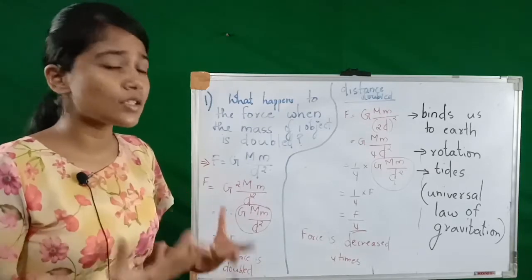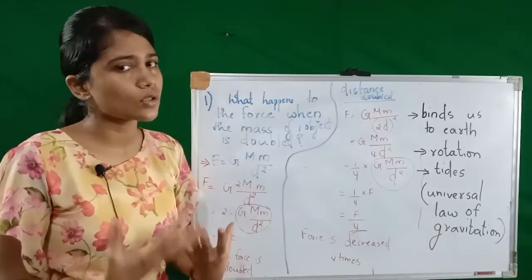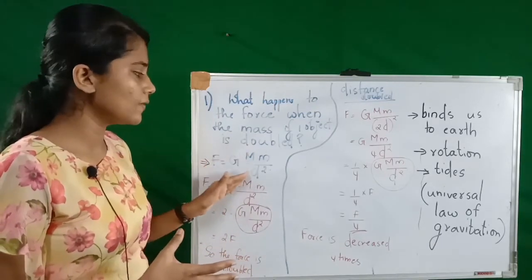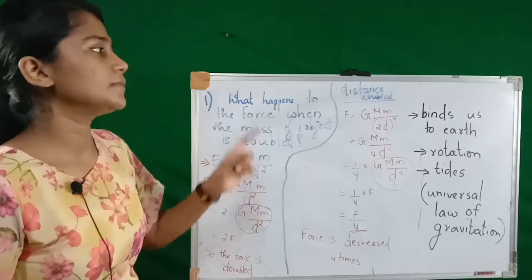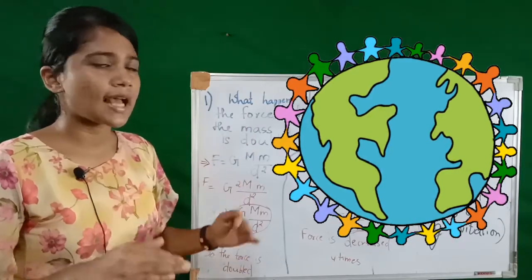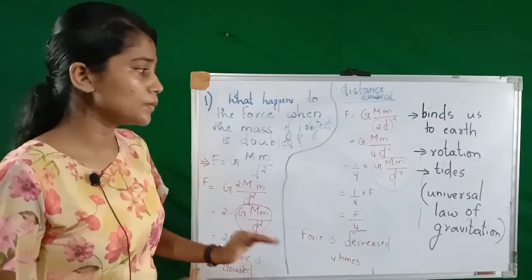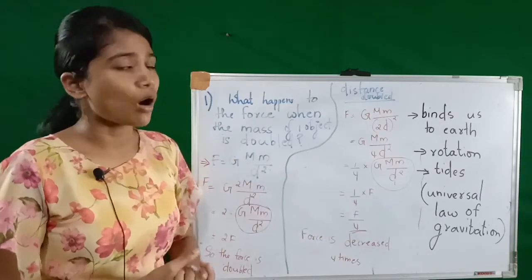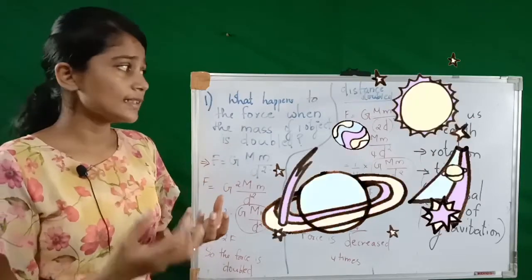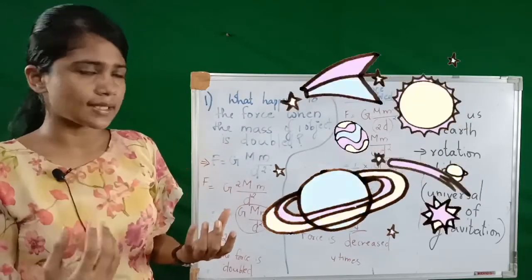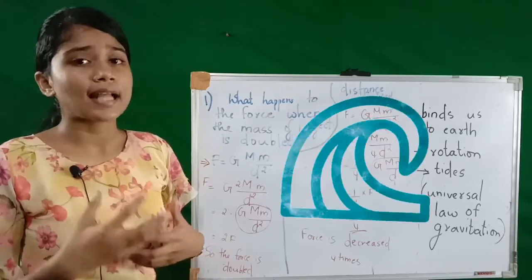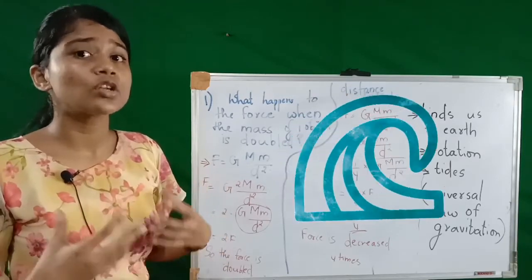Now we should know the uses of the universal law of gravitation, which is F equal to G into m into m the whole divided by d square. The first use is that it helps us stay bound to the earth — we are able to stand, walk, and everything on the surface of the earth because of this law. The second is the rotation of the moon around the earth and the rotation of planets around the sun. The last use is the tides that are developed due to the rotation of the moon.